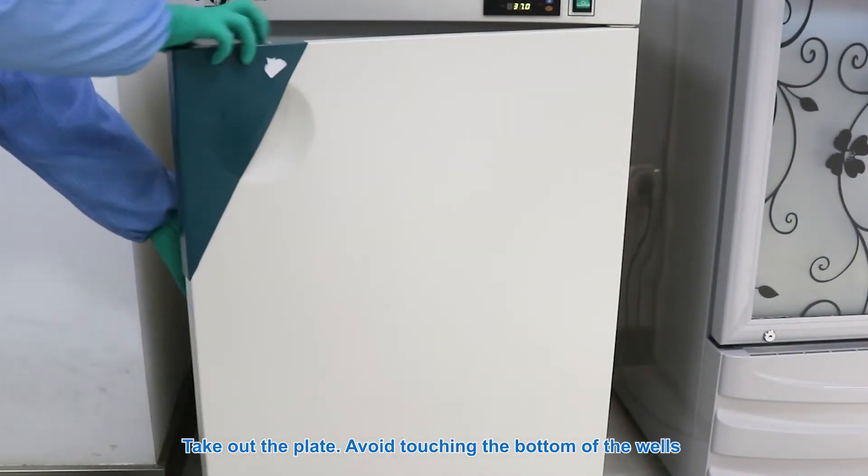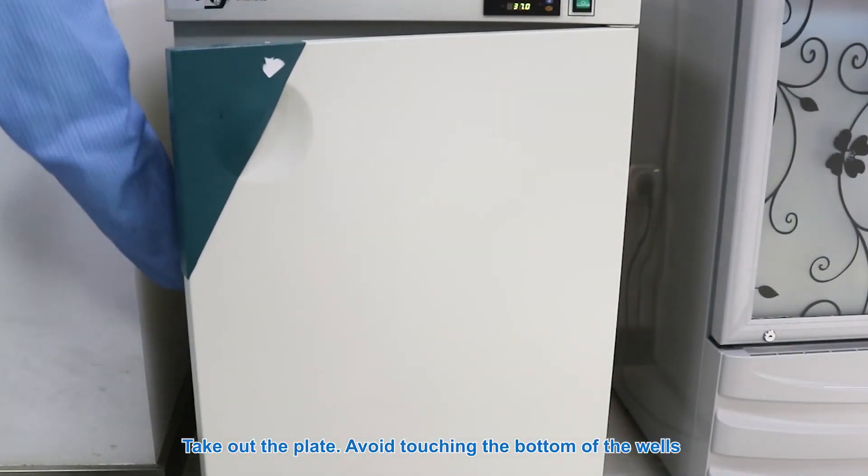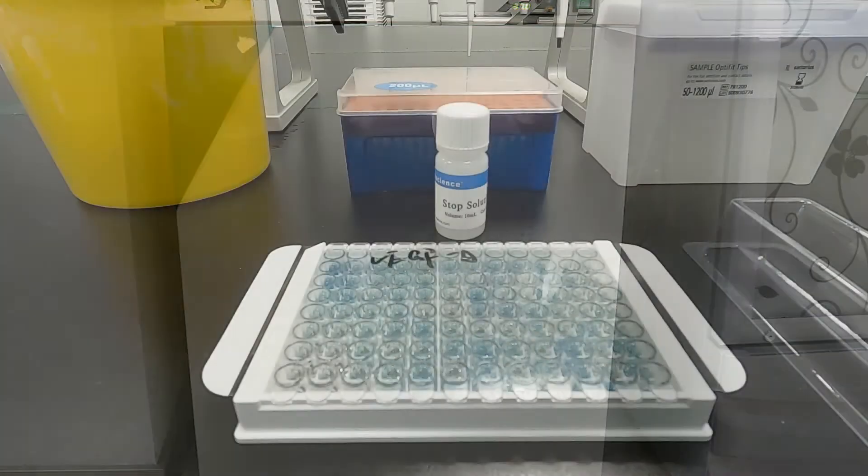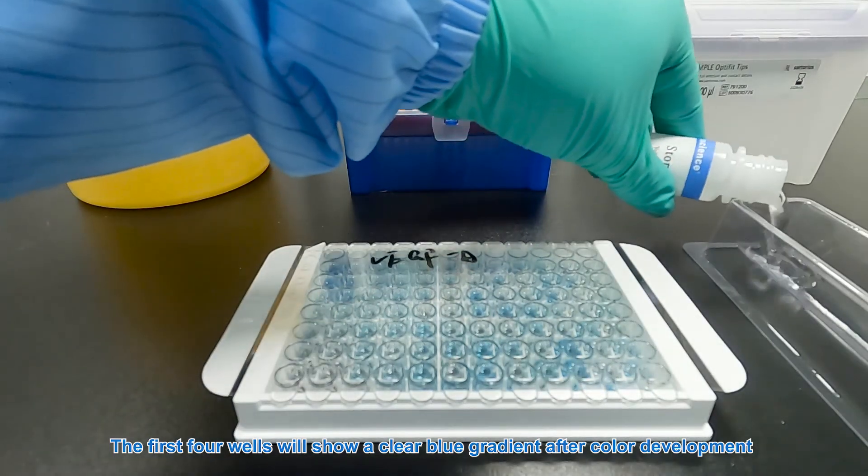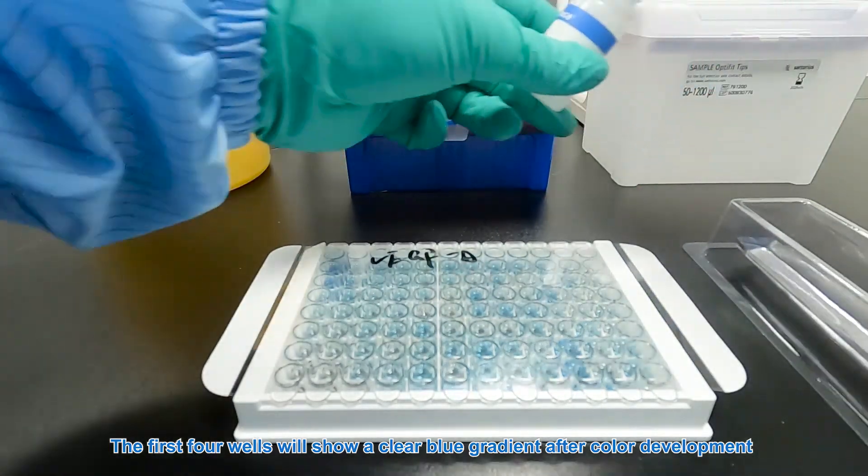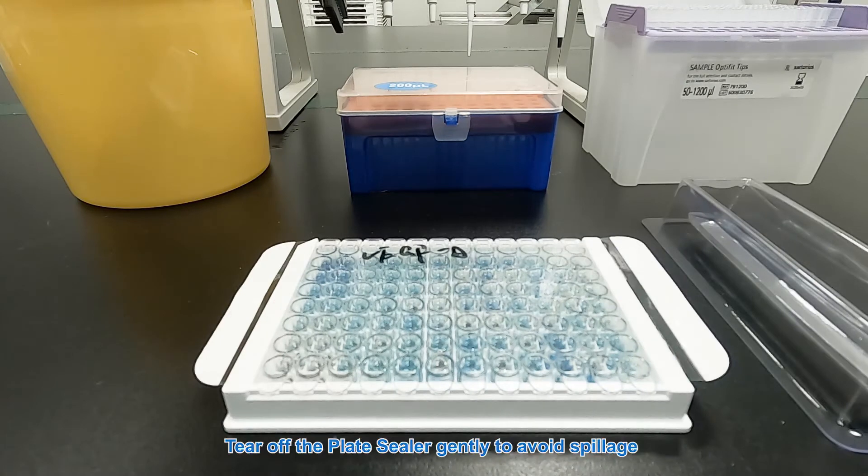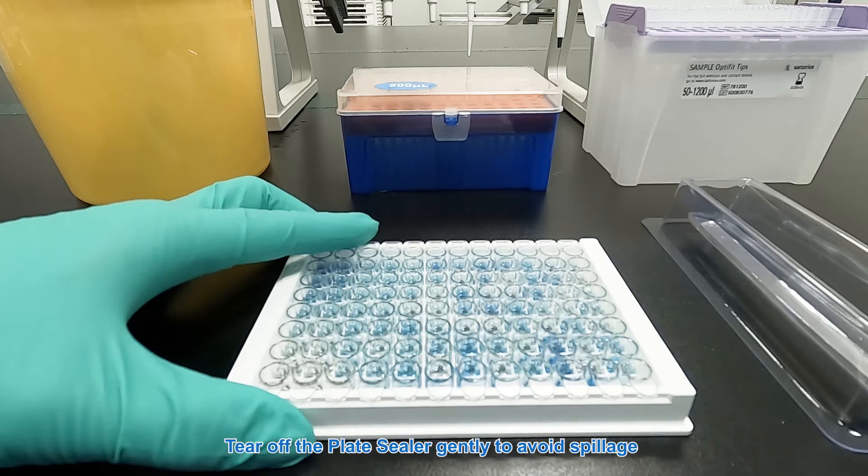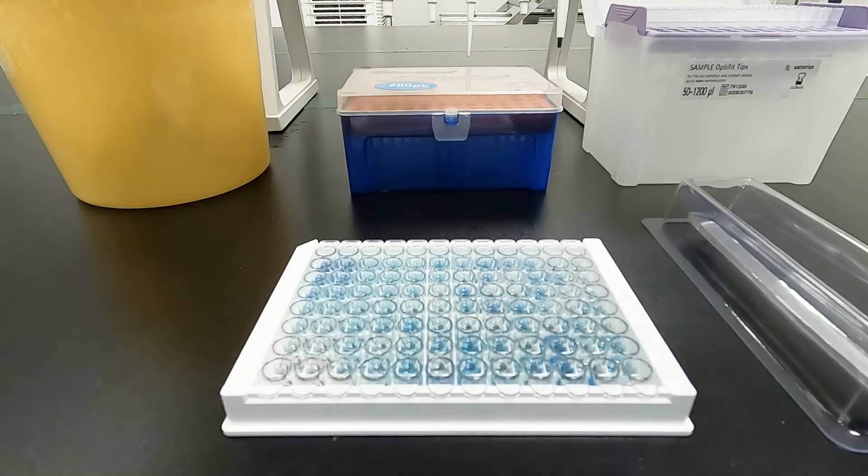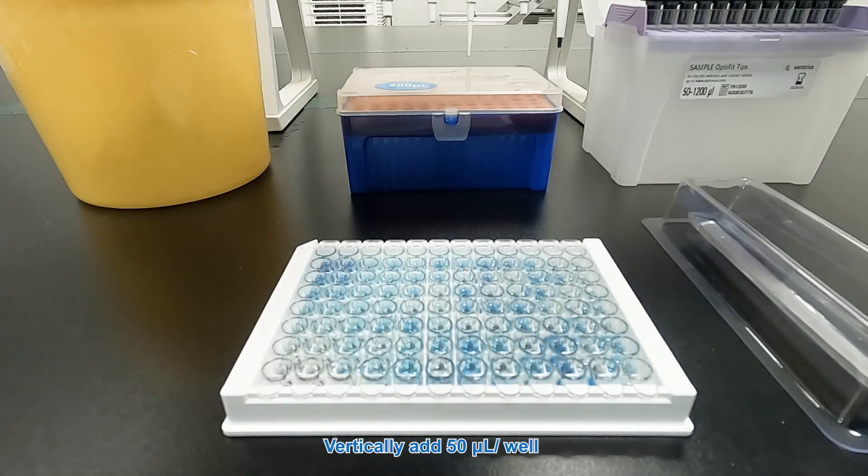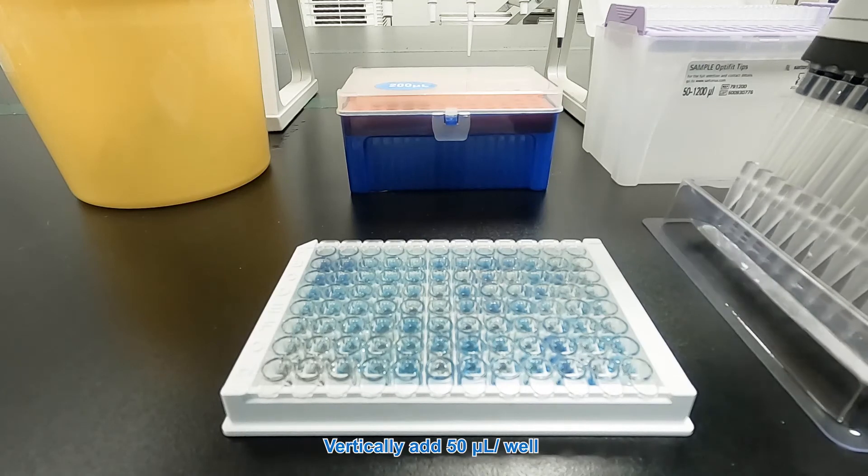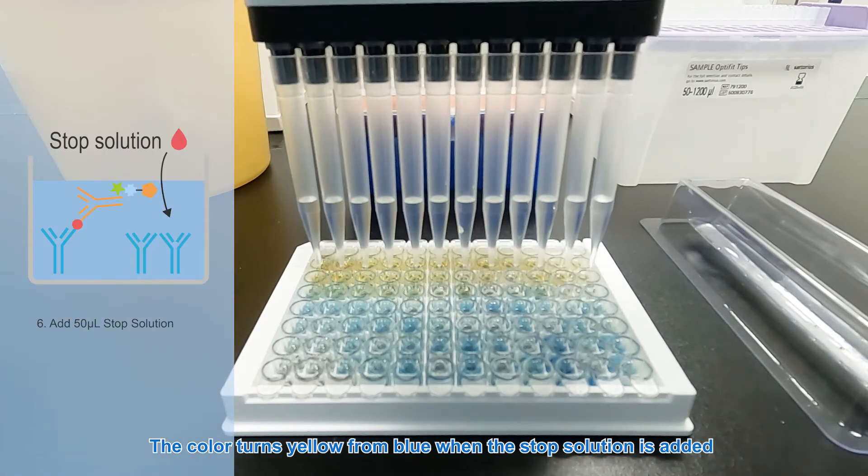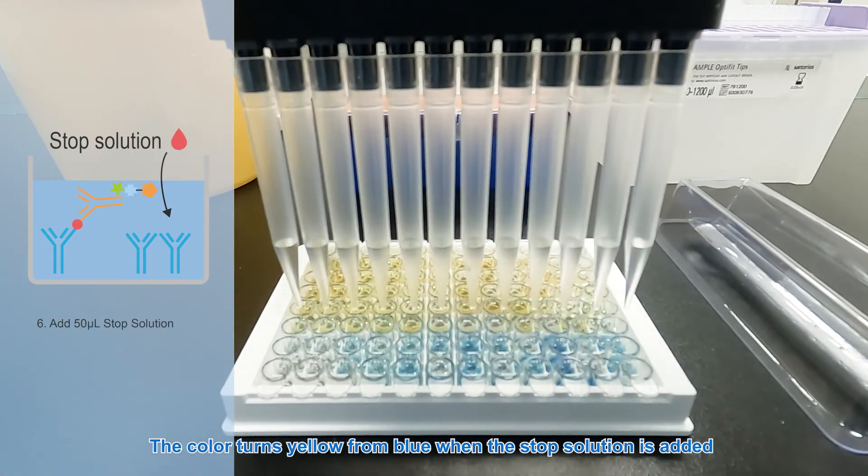Take out the plate. Avoid touching the bottom of the wells. The first four wells will show a clean blue gradient after color development. Tear off the plate sealer gently to avoid spillage. Vertically add 50 milliliters per well. Color turns yellow from blue when the stop solution is added.